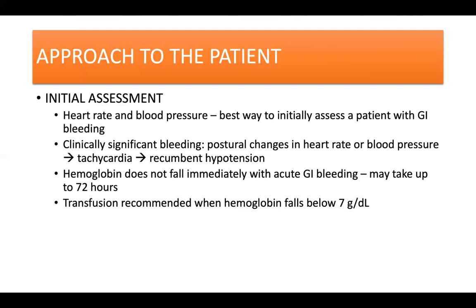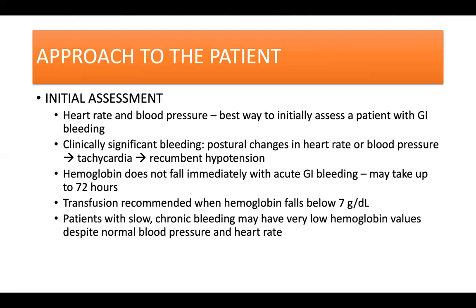Transfusion is recommended only when the hemoglobin drops below 7 grams per deciliter. Remember also that patients with slow, chronic GI bleeding may have very low hemoglobin values despite normal blood pressure and heart rate.